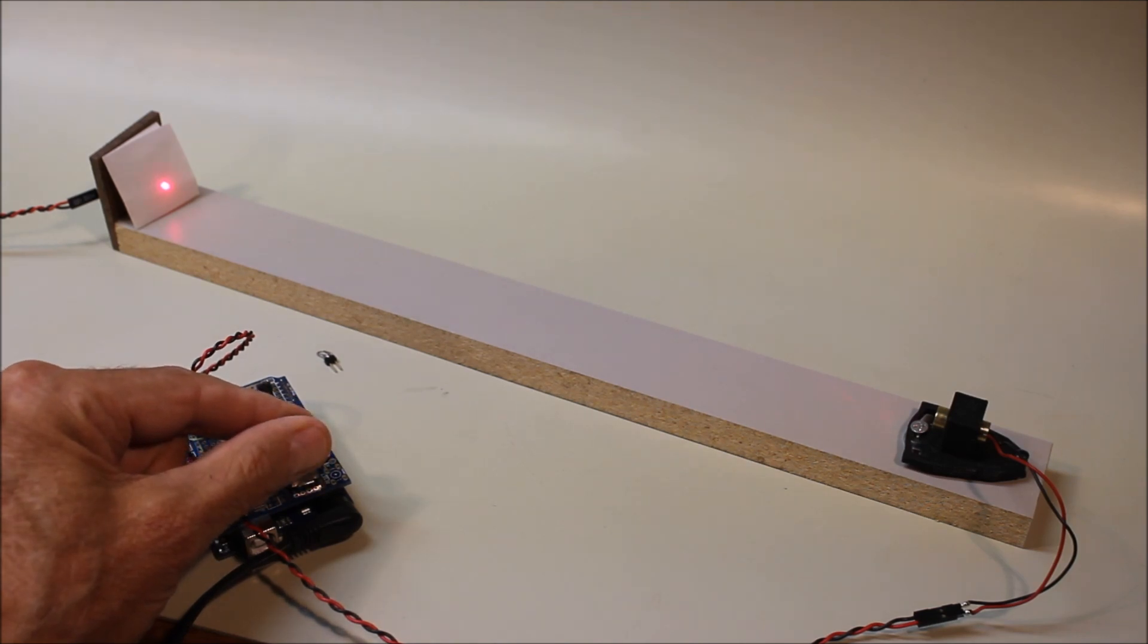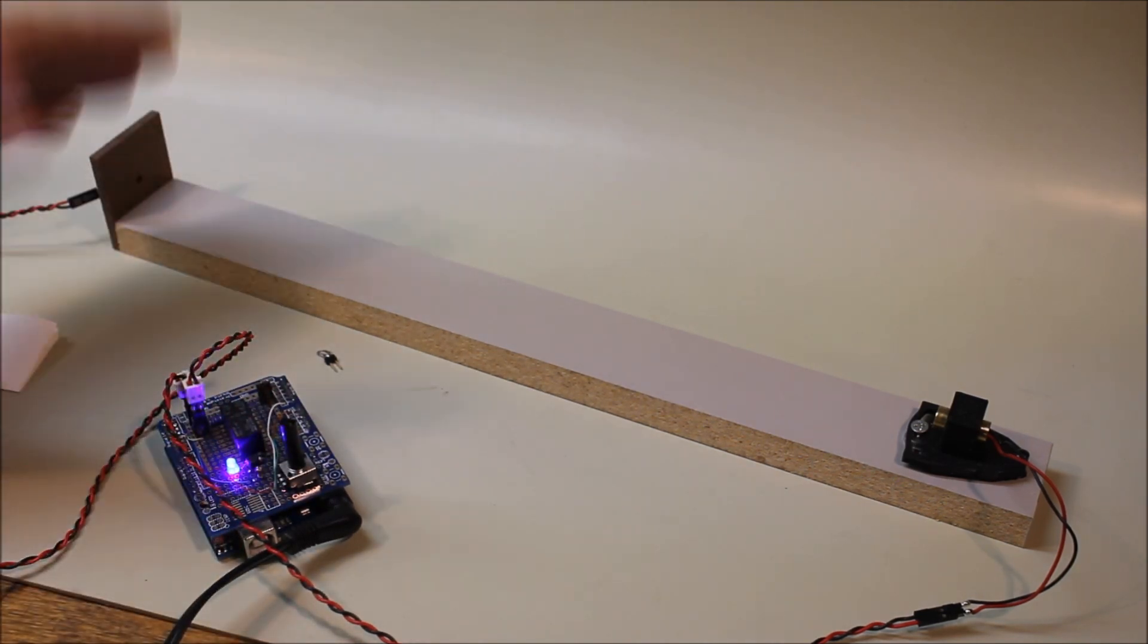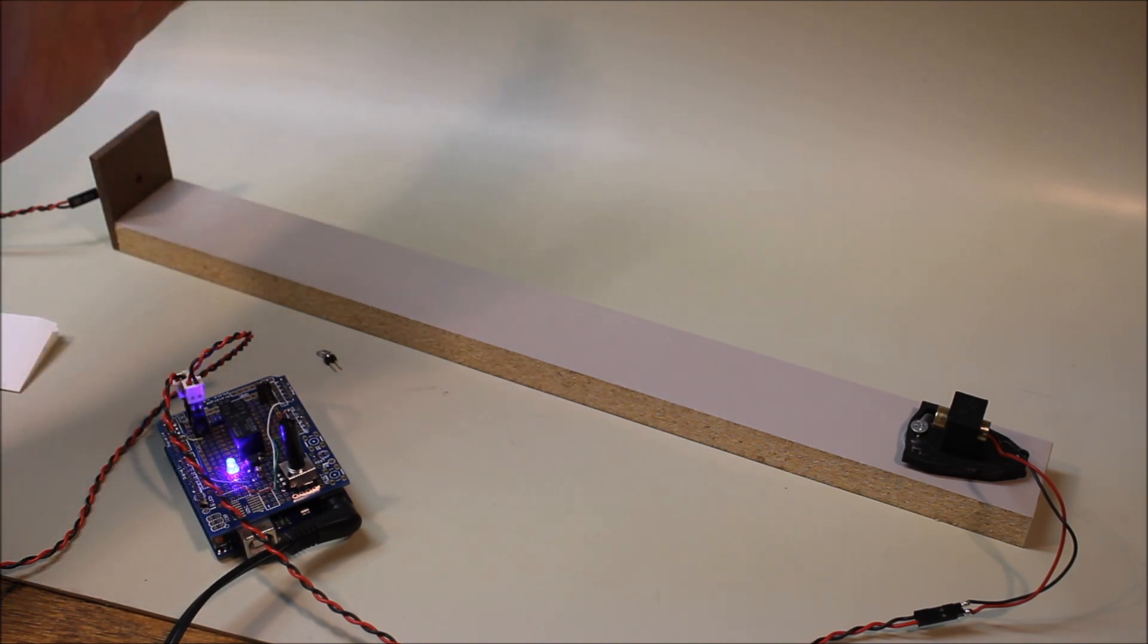It's actually flickering much more clearly with the Arduino than with the PIC. And again, if I turn it all the way, it all but disappears. But the detector still works rather well.